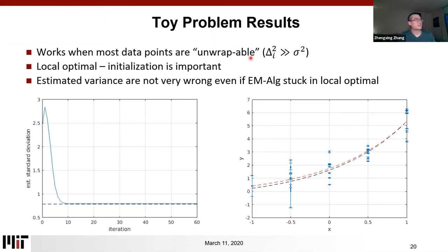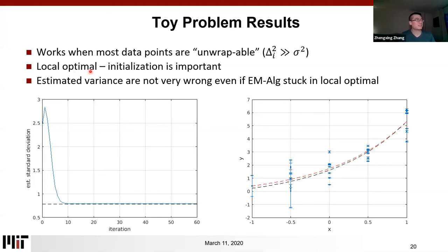This EM algorithm works well for the toy problem. It converges to the variance fairly quickly, and the reconstructed clean data from the EM algorithm looks close to the actual distribution. One important note is that a good initialization is needed; otherwise the algorithm may be trapped in a local optimum. However, the good news is that even when trapped in a local minimum, the estimated variance is still not very wrong — it remains around the true value.